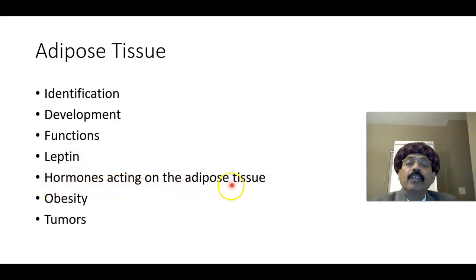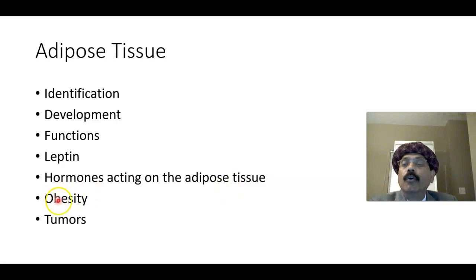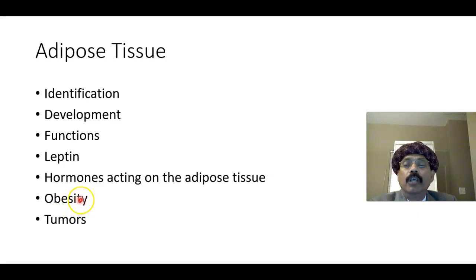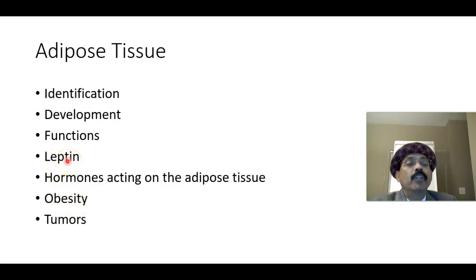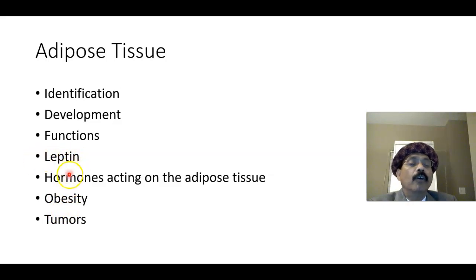Multiple hormones act on adipose tissue, including noradrenaline, growth hormone, corticosteroid, and insulin. Obesity is a clinical condition now epidemic worldwide, especially in wealthy countries, due to inactivity, overeating, and lack of action of leptin or its receptor — there may even be mutation of the receptor. There is also an inflammatory response in the body and release of cytokines from the adipose tissue.